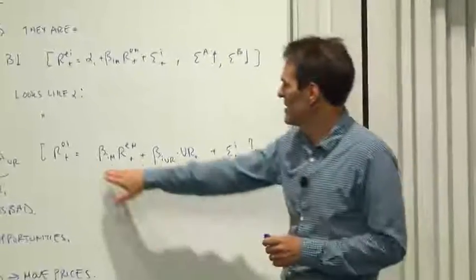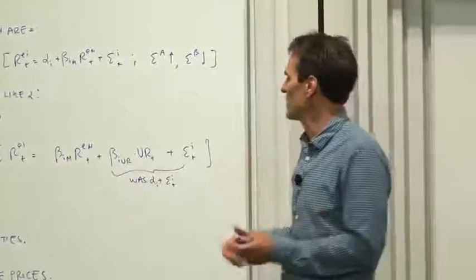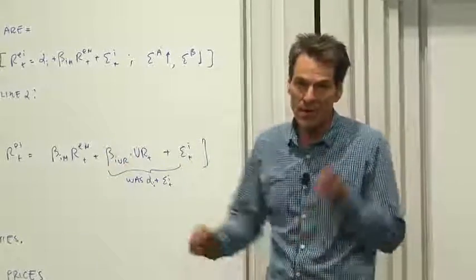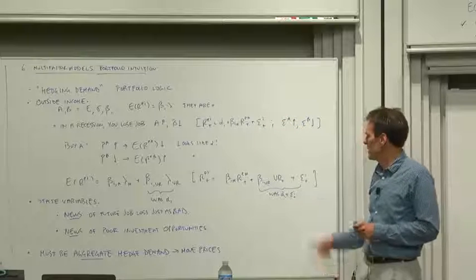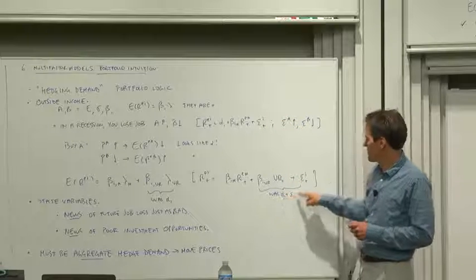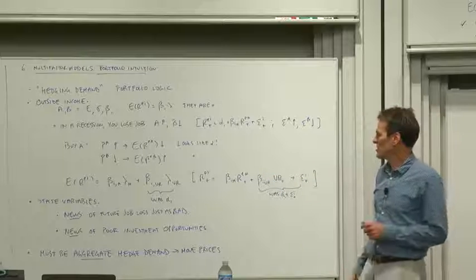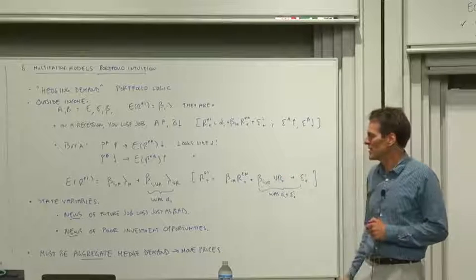Looked at in terms of the time series regressions, what happened? Well, now if we run a regression beta on the market and beta on the unemployment rate, for example, these two assets will have different beta on the unemployment rate. One goes up, one goes down. So what was just a residual, what was alpha plus residual, is now beta plus a new residual. Some of this residual is soaked up in their tendency to move with the unemployment rate.